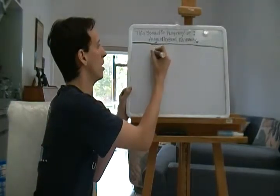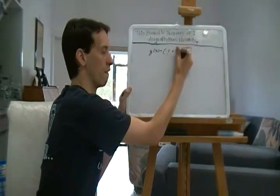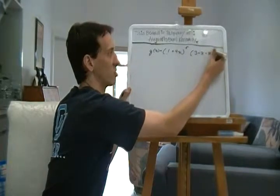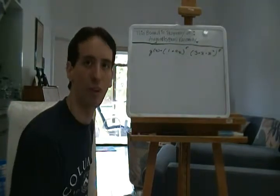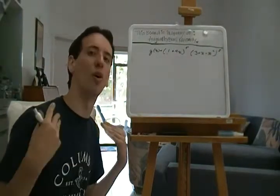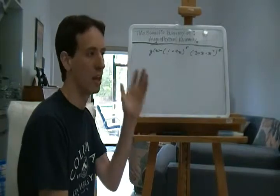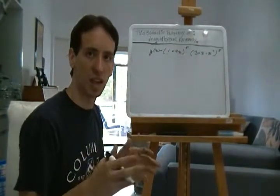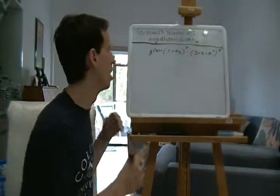Let's write this on the board: g of x equals (1 plus 4x) to the fifth, times (3 plus x minus x squared) to the eighth. What you may have done is apply the chain rule to both of these and then multiplied them together. Unfortunately, you'd be wrong, because we also have something called the product rule that prevents you from doing that. So you have to treat this as a product of elements that need the chain rule. The product rule was: the first times the derivative of the second, plus the second times the derivative of the first.